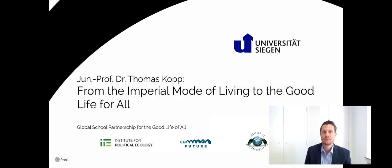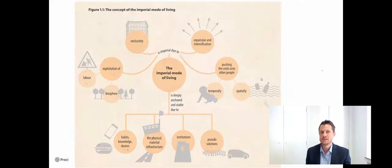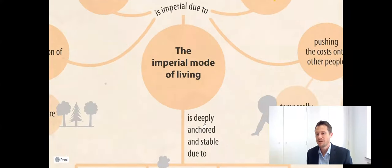The idea of the concept of the imperial mode of living is that there are many problems and most people are aware of them, but nothing seems to change on a significant scale despite this general awareness. So what we see here is a visualization of this concept. In the upper half we see the characteristics of that way of life. In the lower part we see the reasons for why this way of life is so stable and does not change easily. So let's first start with the upper part.